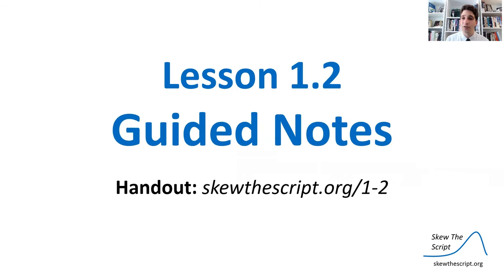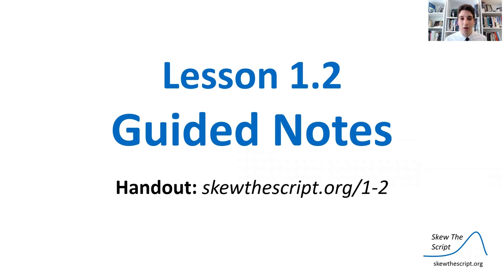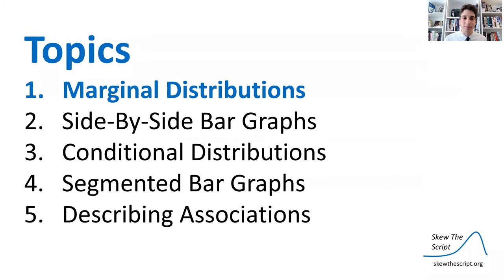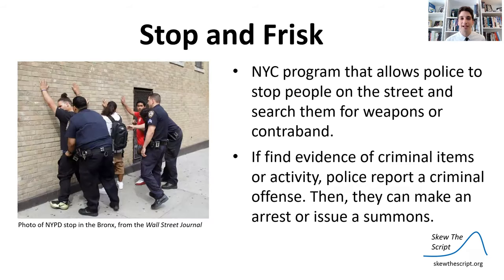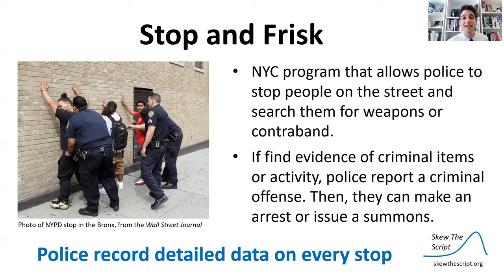If you'd like to follow along using guided notes, you can print them up at this URL. We're going to look at marginal distributions, but first let's talk about the data set. This data set is from the Stop and Frisk Program — a New York City program that allows police to stop people on the street and search them for weapons or contraband. If police find evidence of criminal items or activity during the stop, they can report a crime and make an arrest or issue a summons. What makes this program unique from a data science perspective is that police are mandated to record detailed data on every single stop, and that data is publicly available, giving us a unique window into these police interactions.